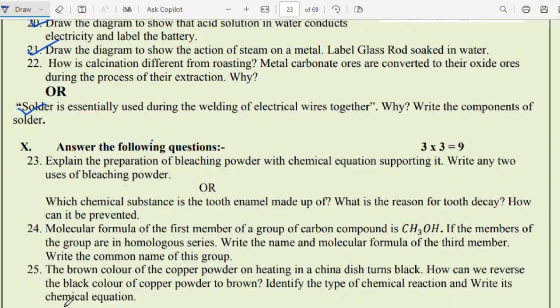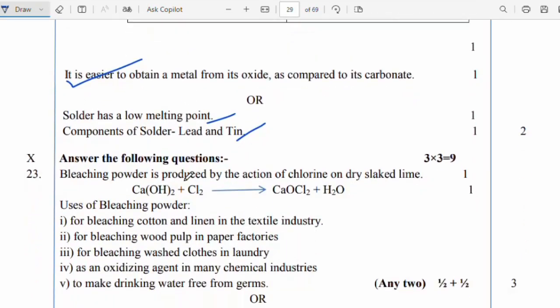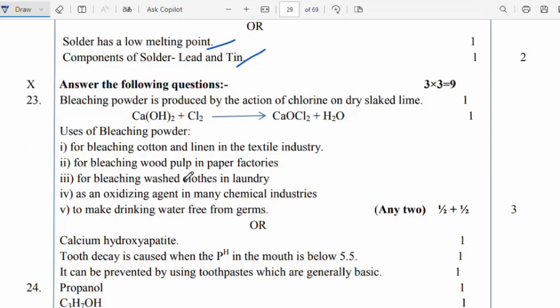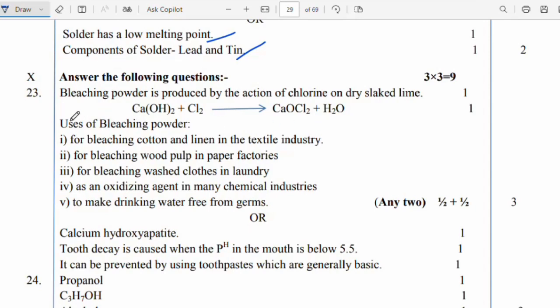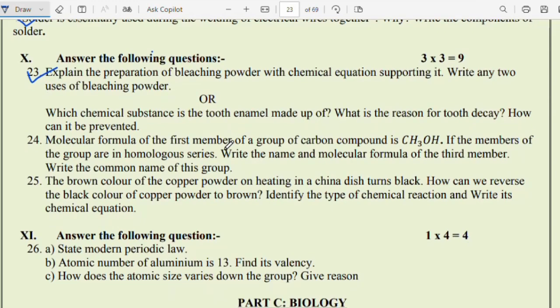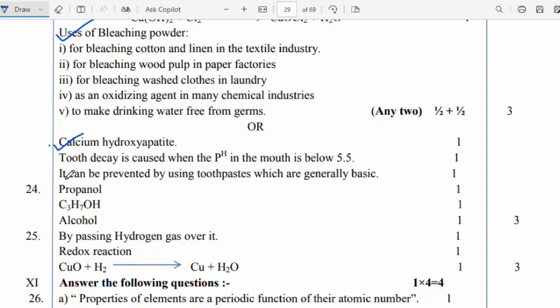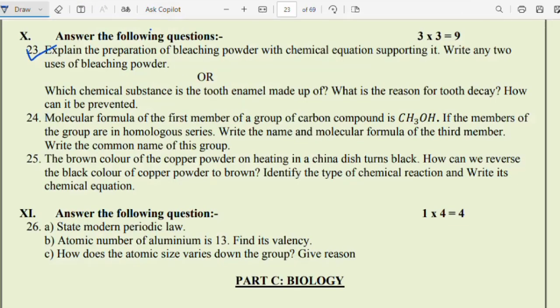Question 23, three marks question: Explain the preparation of bleaching powder with the chemical equation supporting it. Write any two uses of bleaching powder. Bleaching powder is produced by the action of chlorine on dry slaked lime. Complete the equation and write where we are using the bleaching powder. The answer I have given. You have to practice because it carries three marks. Or, which chemical substance is tooth enamel made up of? What is the reason for tooth decay? How can we prevent it? I have given the answer children. Practice because when the pH in the mouth is less than 5.5, it causes tooth decay.